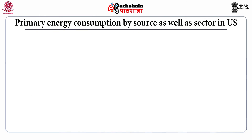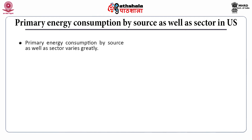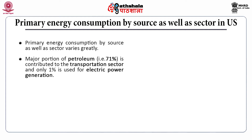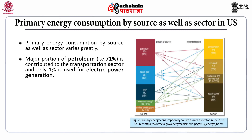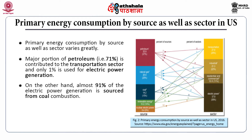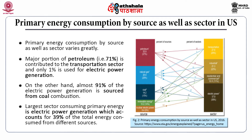The primary energy consumption by source as well as sector in the US varies greatly. The major portion — 71% of petroleum — is contributed to the transportation sector, and only 1% is used for electric power generation. On the other hand, almost 91% of electric power generation is sourced from coal combustion. The largest sector consuming primary energy is electric power generation, which accounts for 39% of the total energy consumed across different sources.